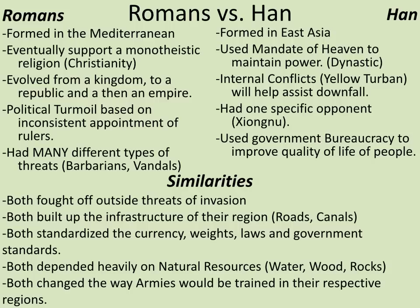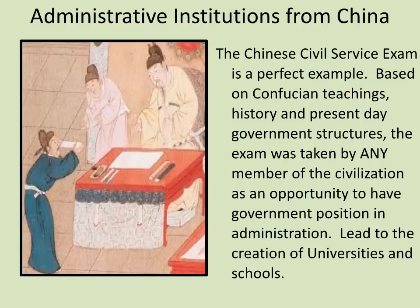The Han are going to be formed in East Asia. They use and maintain the power of the mandate of heaven. They have internal conflicts like the Yellow Turban Revolt, which will make their downfall faster. They use government bureaucracy to improve the quality of life — the fastest way to improve your station of life is to become a government bureaucrat by taking the civil service exam. The similarities between Rome and Han: both fight off outside threats of invasion, build up infrastructure — roads, canals, aqueducts — all improving quality of life. They're known for standardization of currency, weights, and laws in government standards. Both depend very heavily on natural resources, which will eventually lead to their demise.